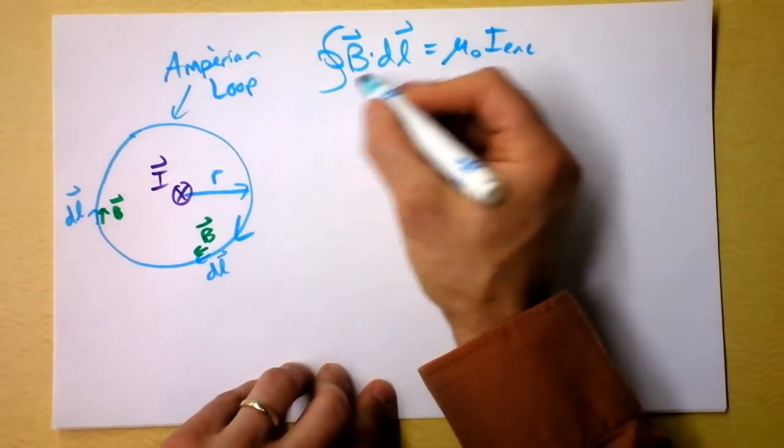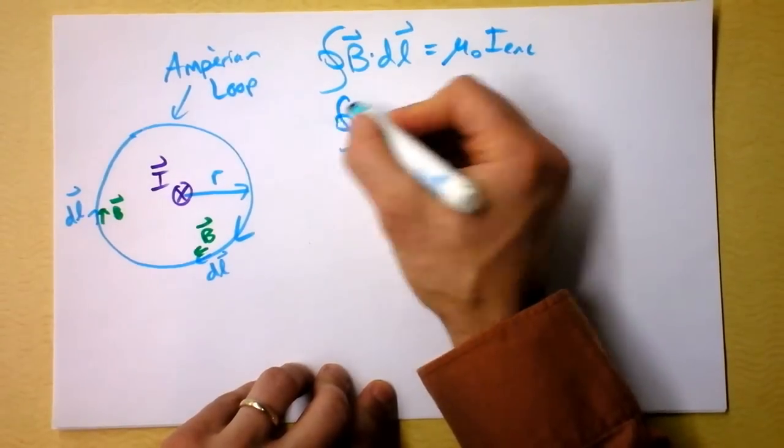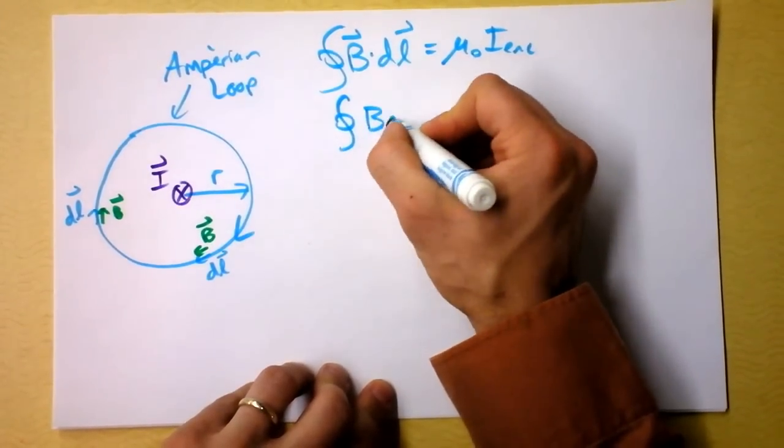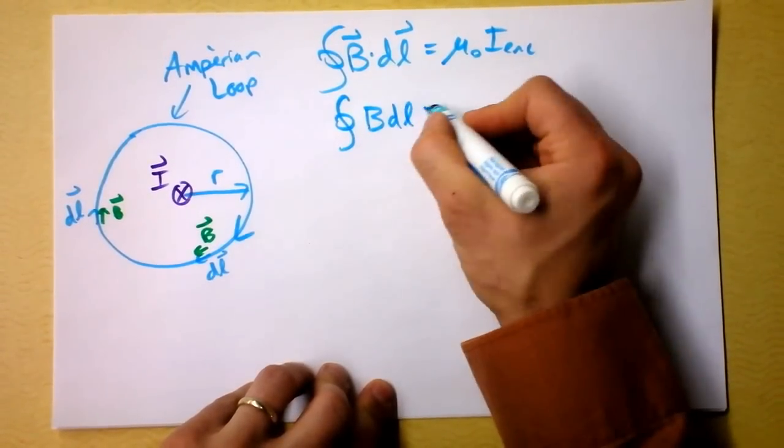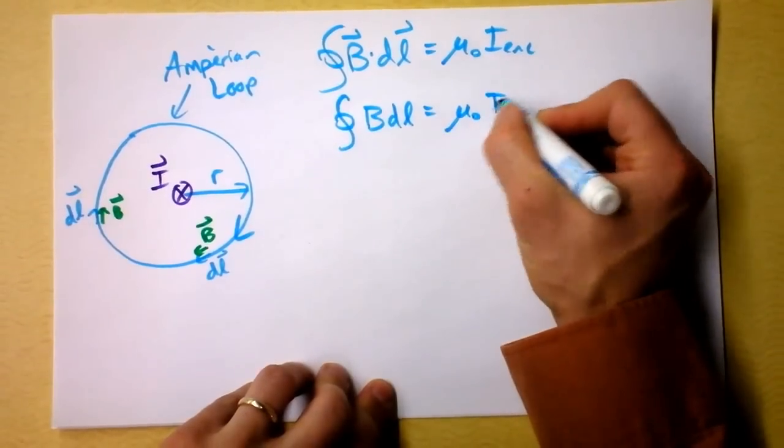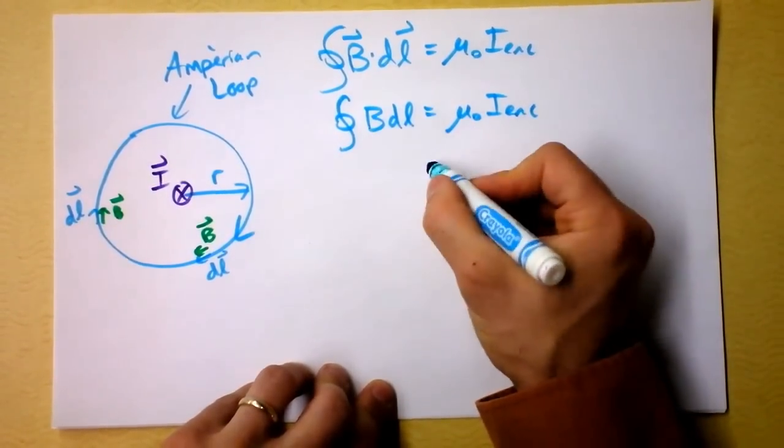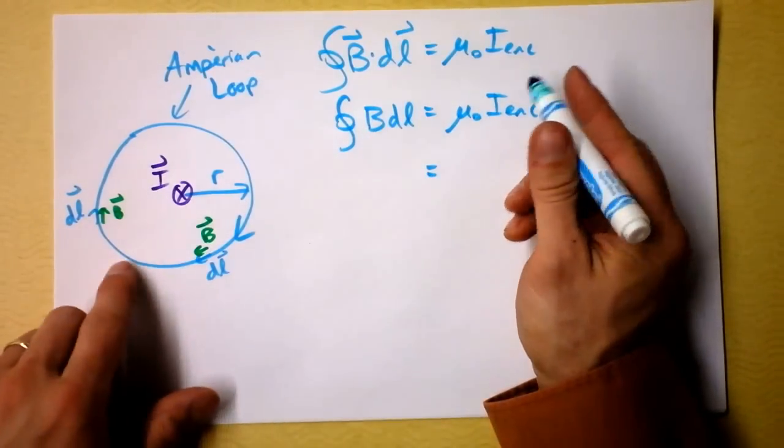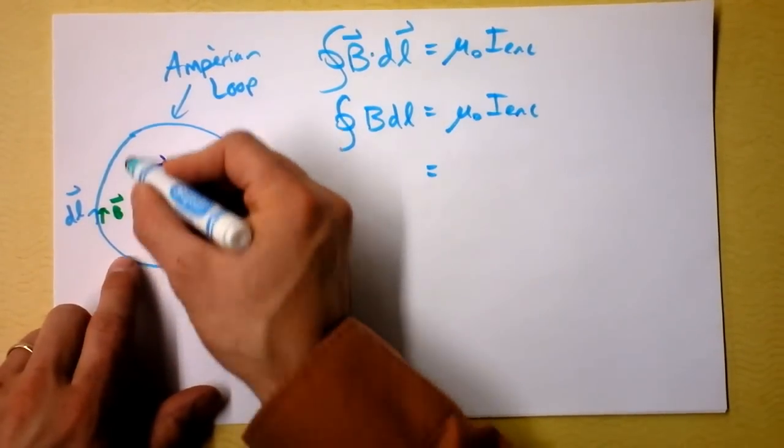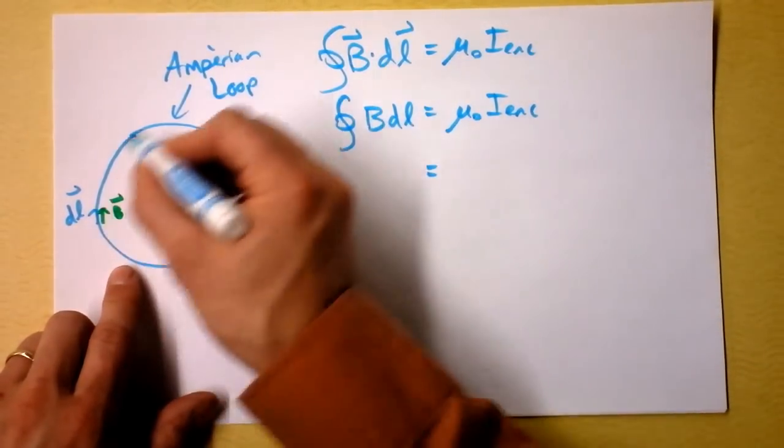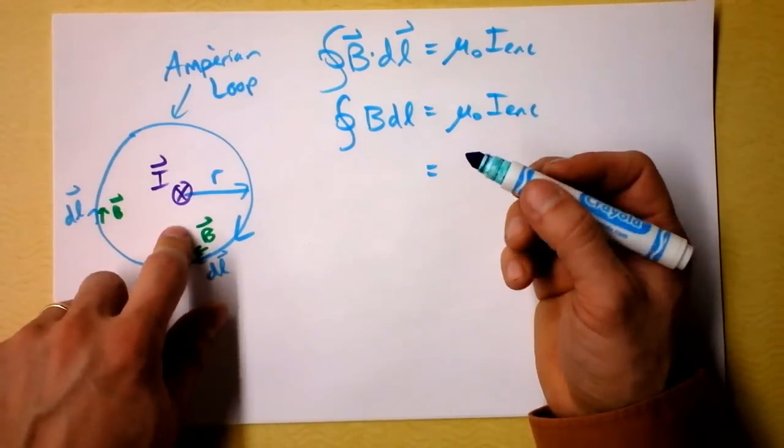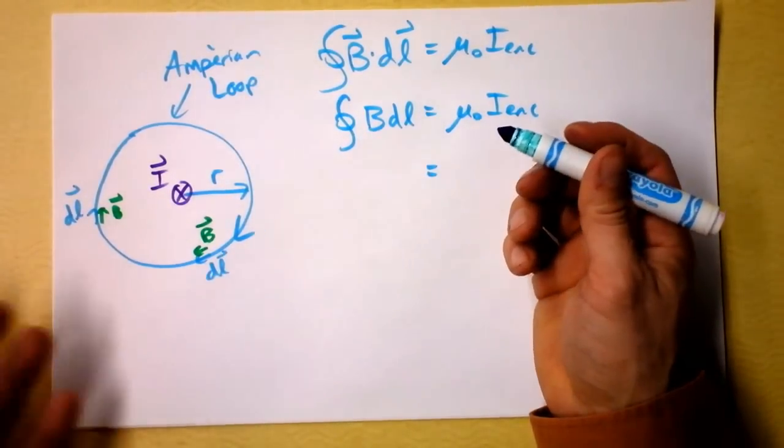My point is, we don't have a dot product anymore. As I go around the loop, I just need magnetic field DL. And that's mu naught times I enclosed. On the left side though, notice that the magnetic field, as long as I stay the same distance away from the wire, I'm going to be going around an Ampere loop with a radius of R, that's always the same distance. Sometimes, magnetic field is a constant.